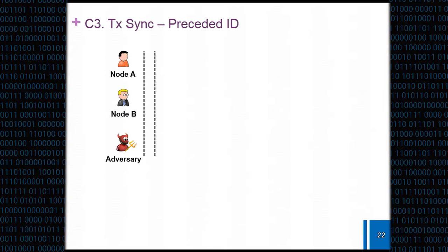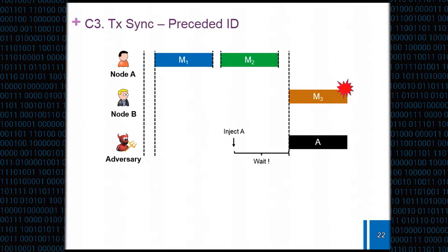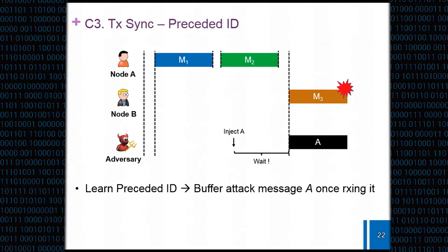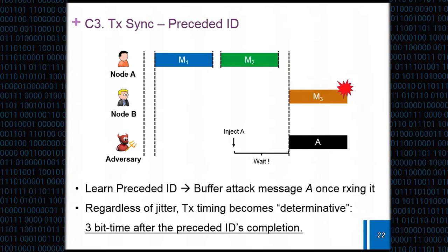How can the attacker exploit such preceded ID? What the adversary can do is that if it analyzes the network traffic, it will have some idea that M3 would always come after M2 and also M2 is always coming after M1. So once seeing M1 or M2, it can inject its message and synchronize the timing with the victims and incur the bit error at the victim side. Learning preceded ID is essential and also the existence of it. Because the timing is pretty determinative, the success accuracy is pretty high for this case.